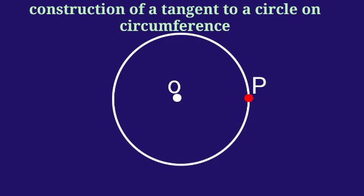Join OP. With P as center, draw two arcs inside and outside of the circle, and name the intersection points A and B.